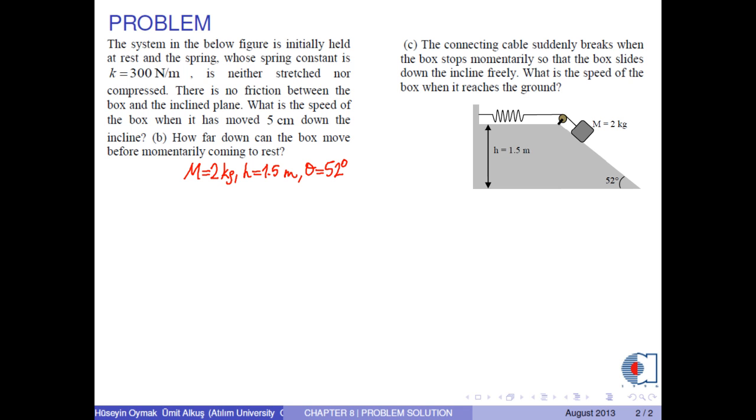The system in the figure is initially held at rest and the spring, whose spring constant is k equals 300 Nm, is neither stretched nor compressed. There is no friction between the box and the inclined plane. Now the system is set free to move.